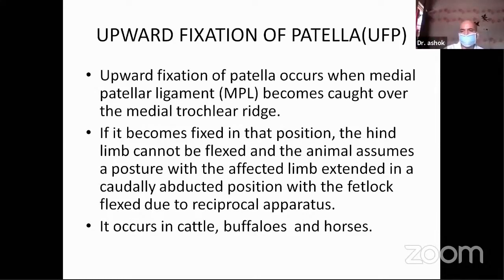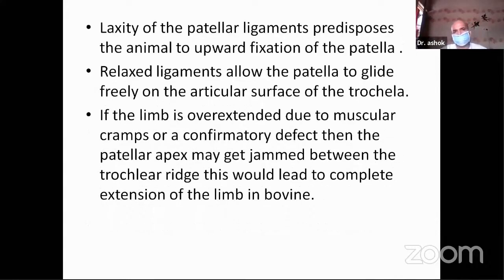Some cases are also noted in camels. The laxity of the patellar ligaments, when in a relaxed position, predisposes the animal to upward fixation of the patella. The relaxed ligaments allow the patella to glide freely on the articular surface of the trochlea. If the limb is overextended due to muscular cramps or a conformity defect, the patellar apex may get jammed between the trochlear ridges, leading to complete extension of the limb in bovines.